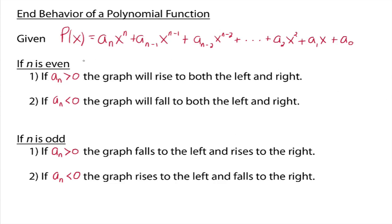Suppose we have a polynomial function: a sub n times x to the n, plus a sub n minus 1 times x to the n minus 1, all the way down to a sub 1x plus a sub 0. That's just writing the degrees in descending order. The a's are the coefficients of your terms. A sub n is referred to as the leading coefficient. And this first term — the one with the highest exponent — is referred to as the dominating term. It determines if your graph is rising or falling on its ends.